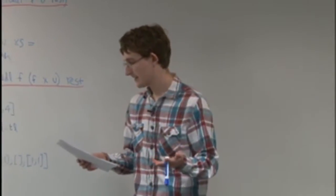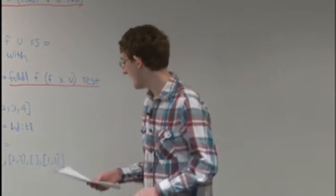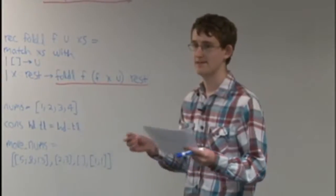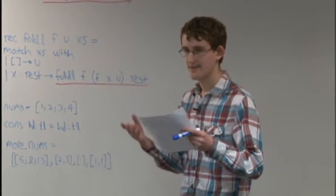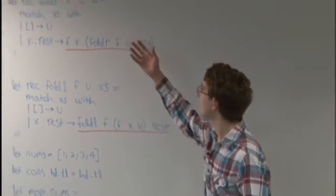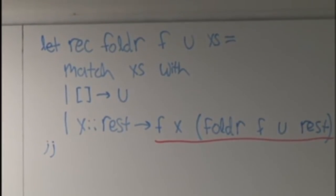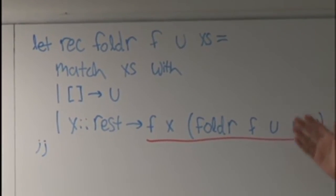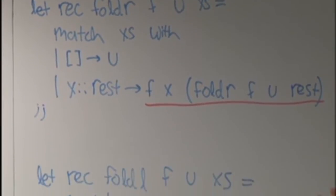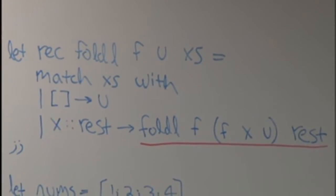We're going to start with tail calls. It's really easier to understand these if you go through some examples rather than talking about what they mean in terms of stack frames — that's all very hard to visualize. But if you take a look at fold right and fold left, where fold right is not tail recursive and fold left is, we can get a sense for what tail recursion really means.